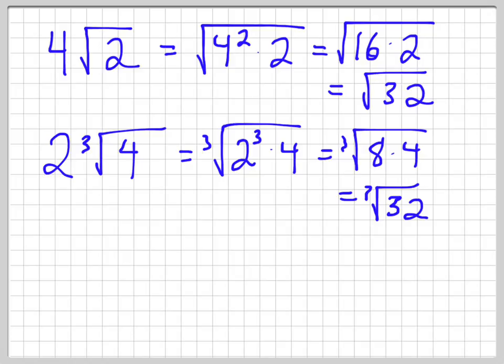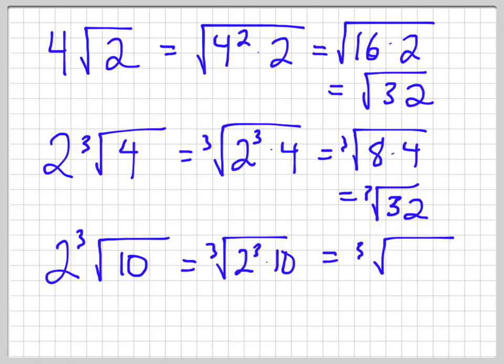So really, guys, it's pretty straightforward. Let's try one more. Let's do another cube root. So I'll go 2 cube root of 10. So that's the same as saying cube root of 2 cubed times 10. And then that's going to be cube root of 8 times 10, cube root of 80. And there we go.